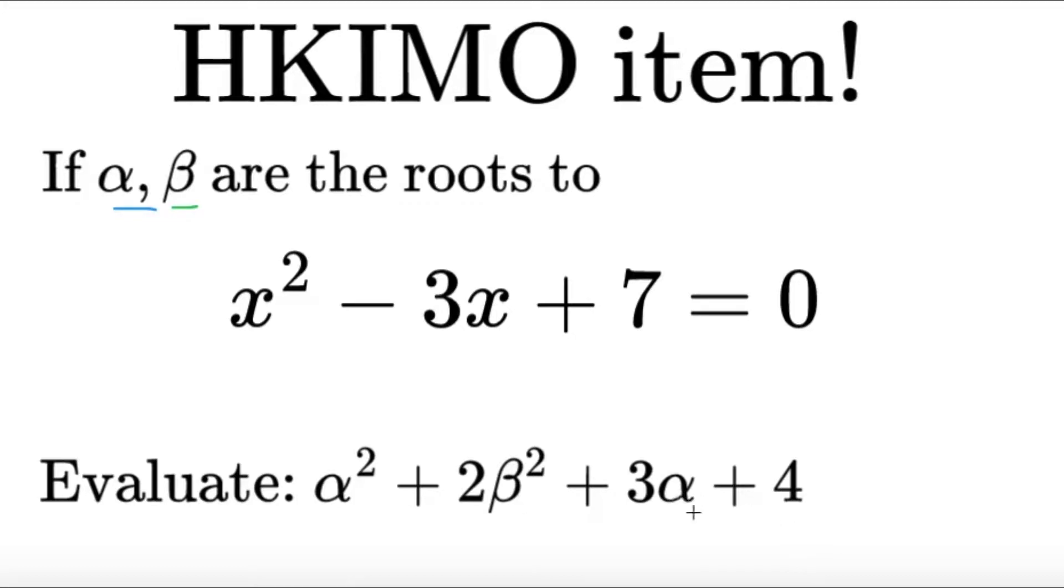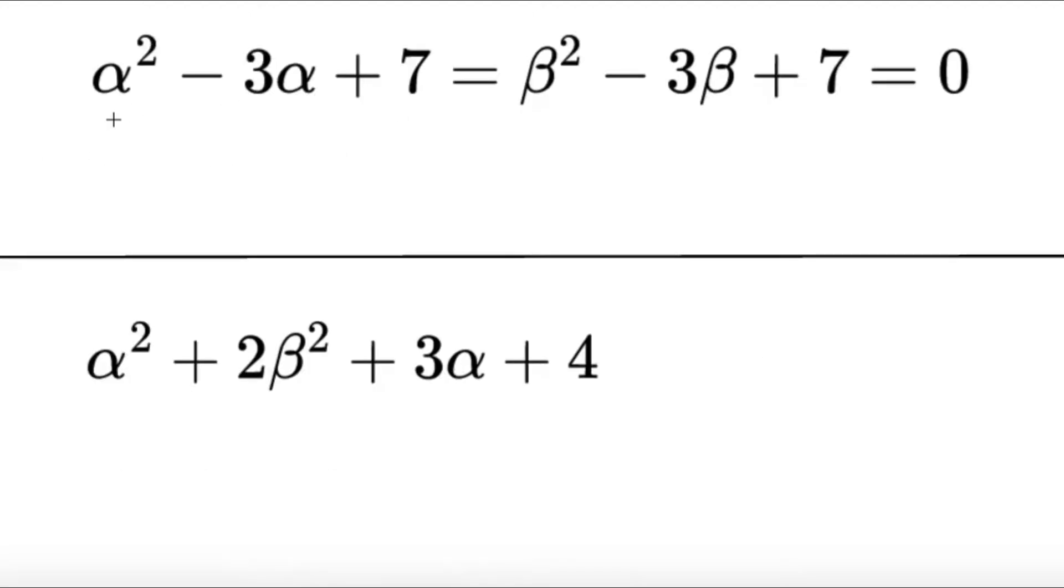Now, since we're dealing with an expression in terms of alpha and beta, and we know that alpha and beta are the roots, we know that the following will hold true. Obviously, since they are the roots, if I substitute them to this equation, I know this equation would be true. So, alpha squared minus 3 alpha plus 7 equals beta squared minus 3 beta plus 7, and it's equal to 0.